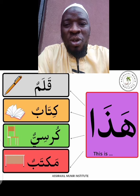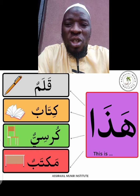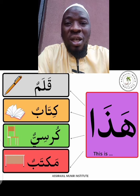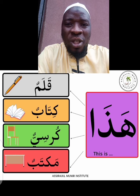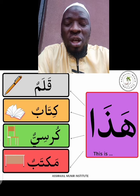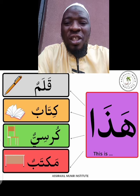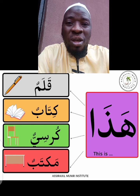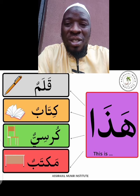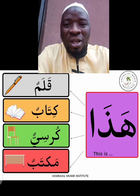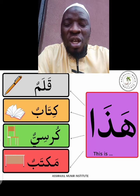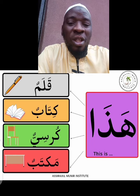Kolam means pen. Then you can see the other one which is kitabun, meaning a book. Then from another picture, korosijun, which means a chair. Then you see maktab, which means a table.